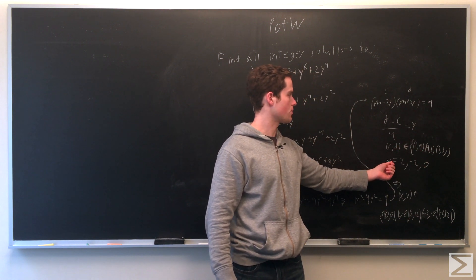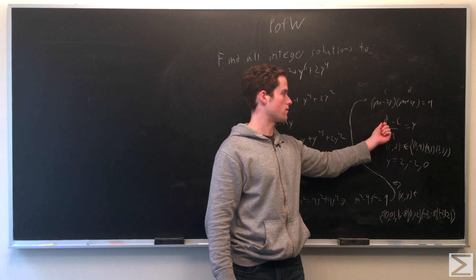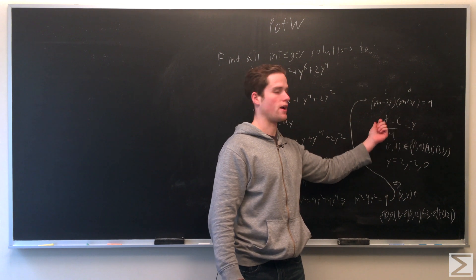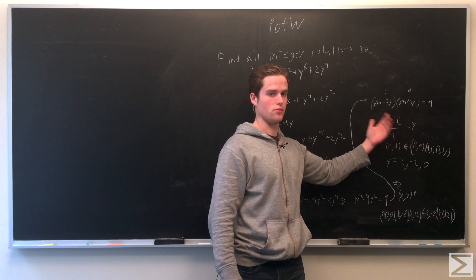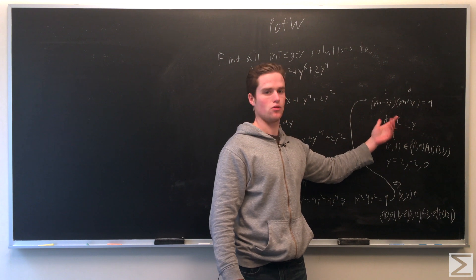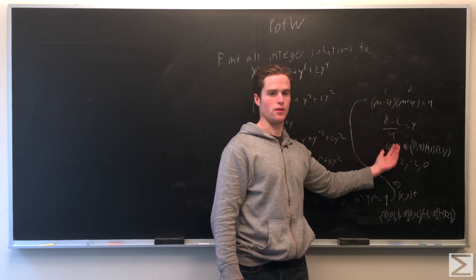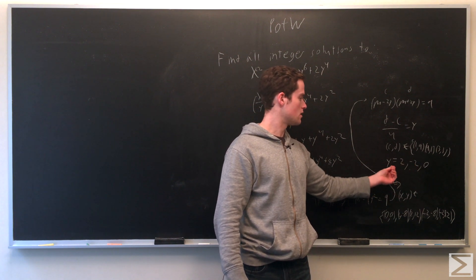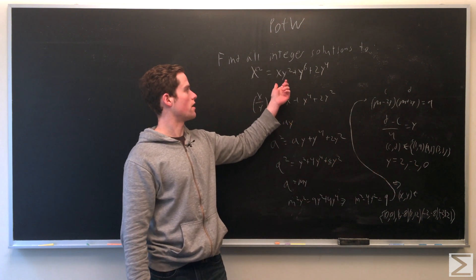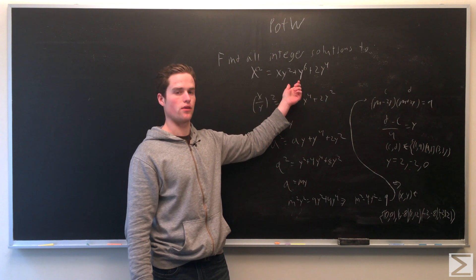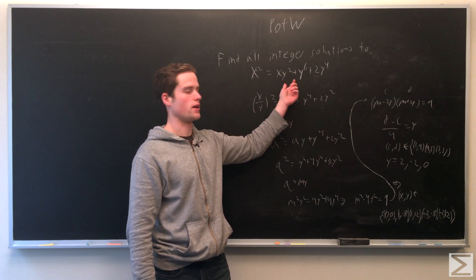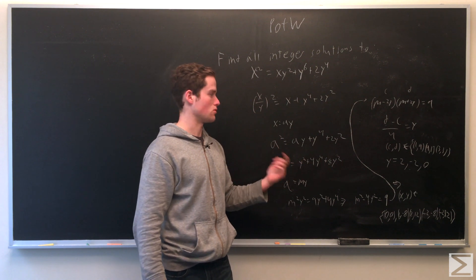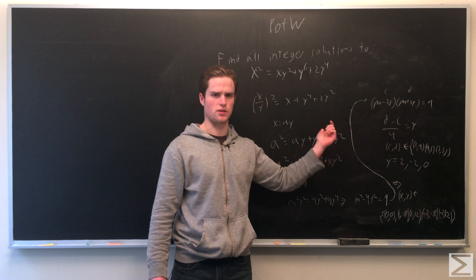So solving for y: plugging in 1 and 9, you get 1 minus 9 over 4, which is 2. Plugging in minus 1 and minus 9, you get 9 minus 1 over 4, which is again 2 or minus 2. Either way, we get y equals 2, minus 2, and 0 as the possible solutions for y. Since the original equation only involves y squared, y equals 2 and y equals minus 2 give the same set of possible x values. Y equals 0 just gives x equals 0.